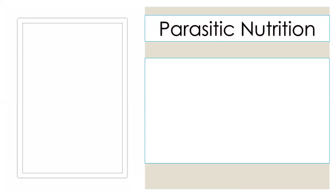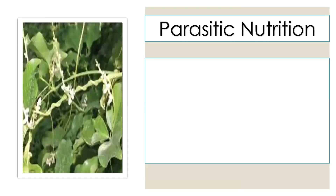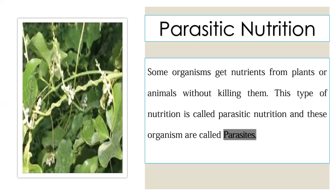Parasitic nutrition — what do you know about parasitism? Parasitism means the relationship between two organisms where one organism depends upon the other. The dependent organism depends on a host. In this picture, we observe the cuscuta plant, which absorbs food materials and meets its nutrition through separate structures called haustoria.